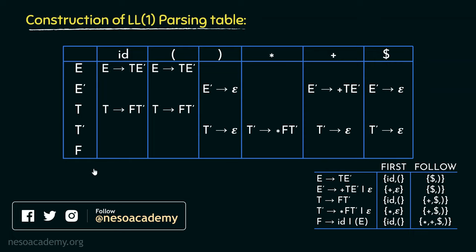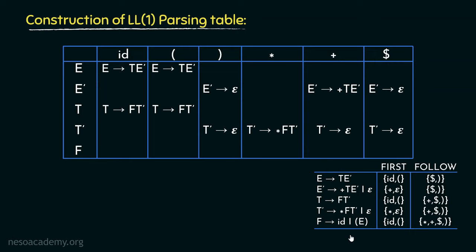Moving to non-terminal F: in the first of F we have ID and open parenthesis. However, F is involved in two different production rules. To generate ID, F uses the production rule F → ID, which is placed under the column of ID. For the production rule F → open parenthesis E close parenthesis, this can generate open parenthesis, so that production rule is placed in the column of open parenthesis.